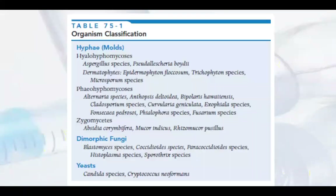These forms are not mutually exclusive, and depending on the growth conditions, a fungus may exist in one or even both forms. You can see in this table the organism classifications: hyphae, molds, dimorphic fungi, and yeast. These three types — molds, fungi, and yeast — are all known as fungi.